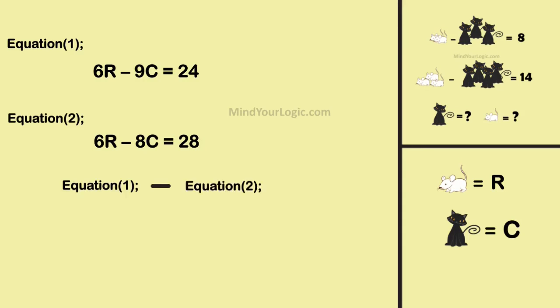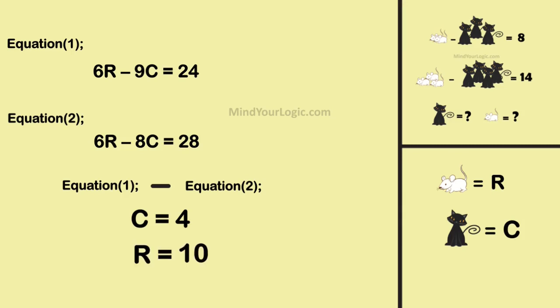Now subtract equation one minus equation two. We get c equals 4. Substitute the value of cat c into equation one, and we get the value of rat r equals 10.